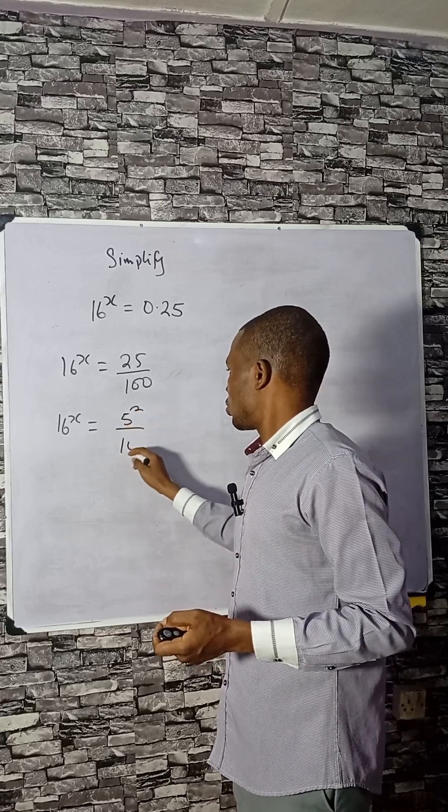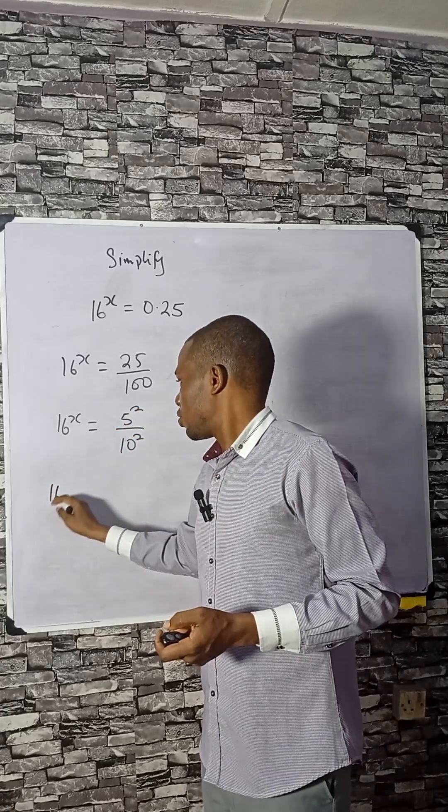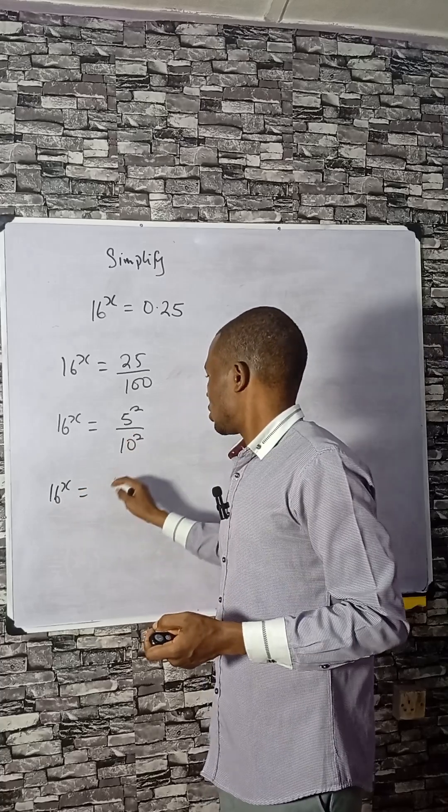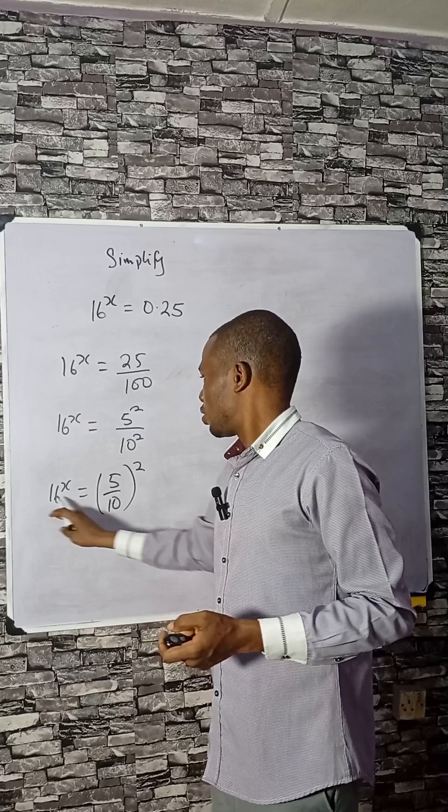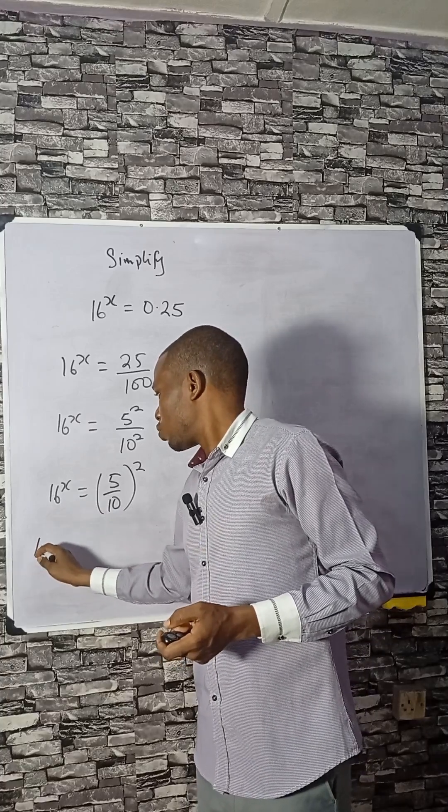And 100 as 10 squared as well. So 16 raised to power x can be written as 5 divided by 10, all squared. You can write 16 as 4 squared.